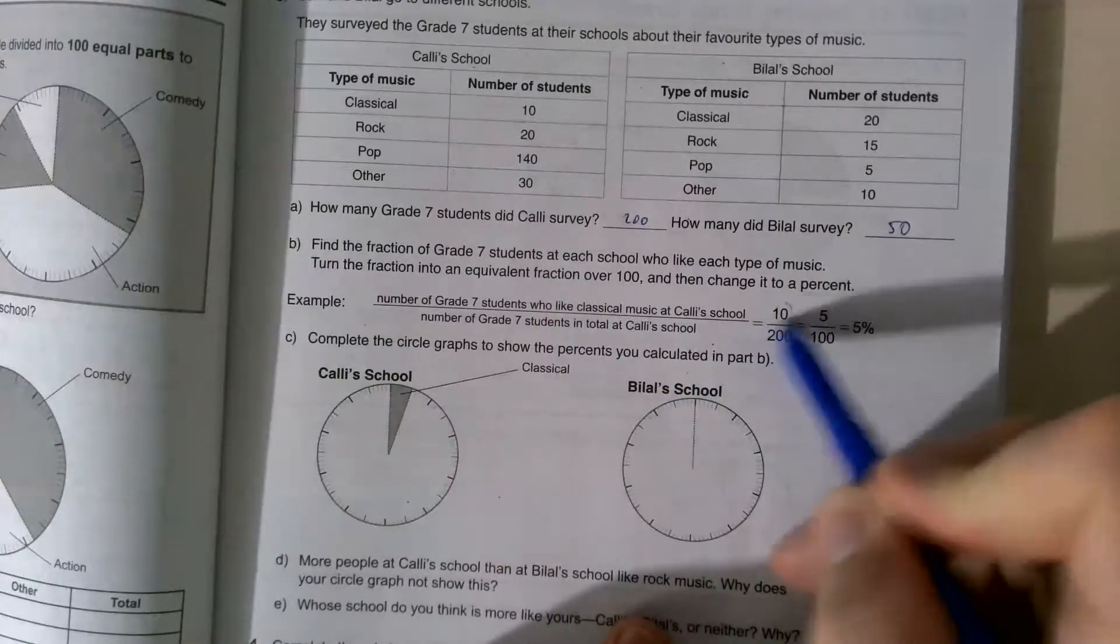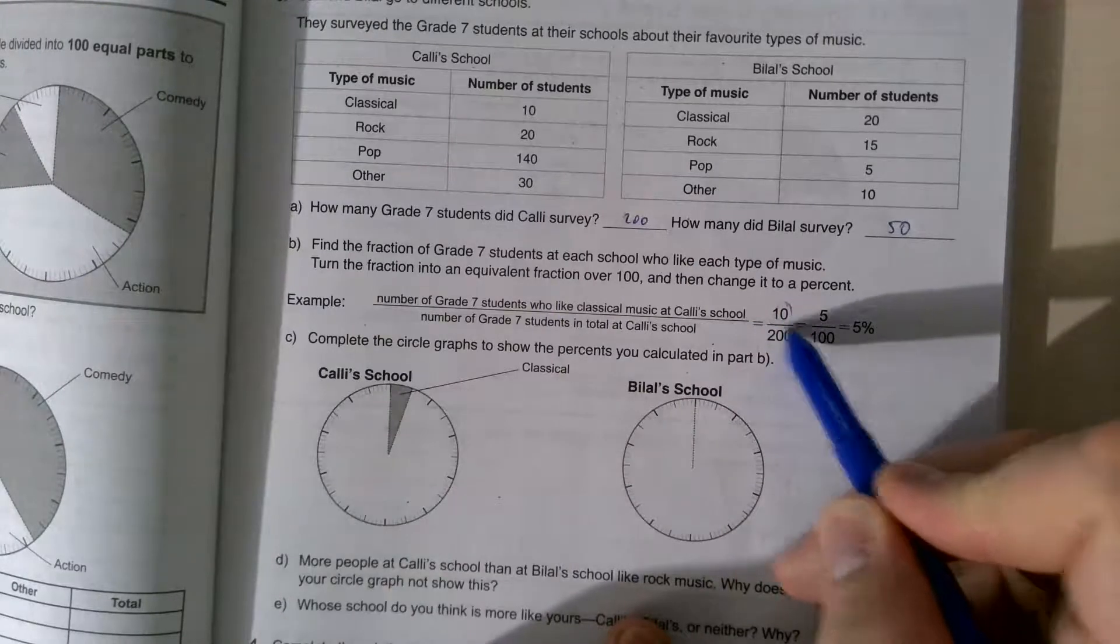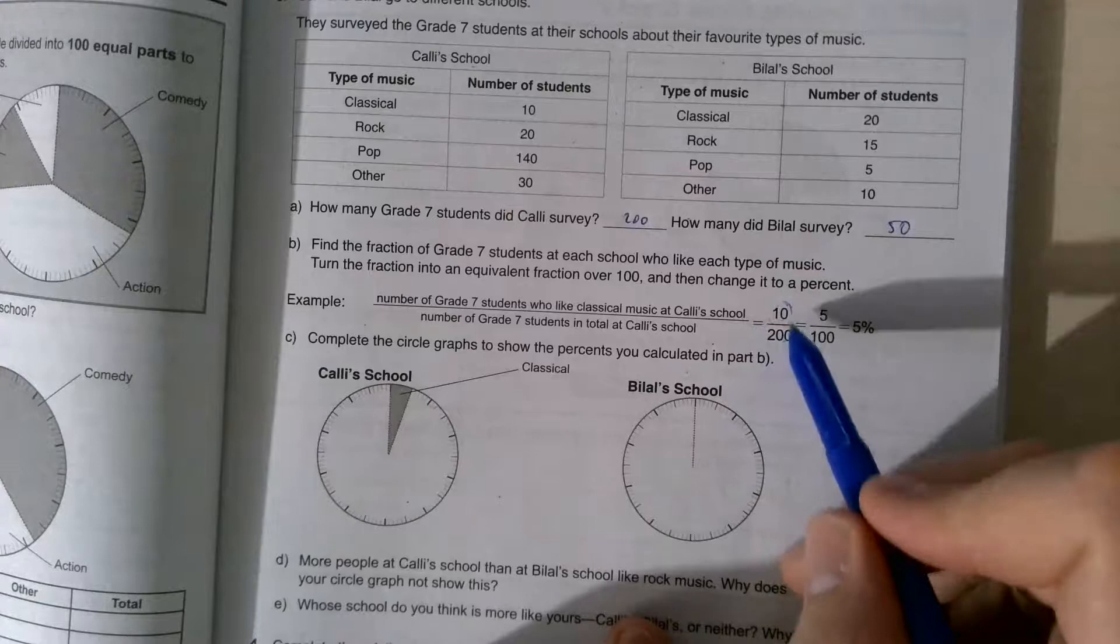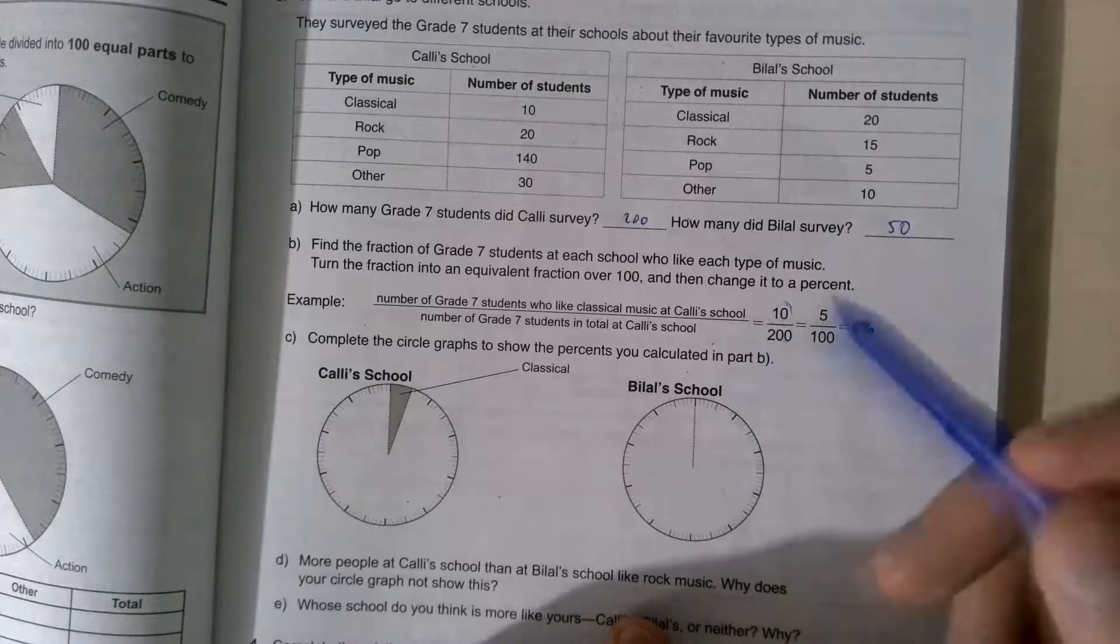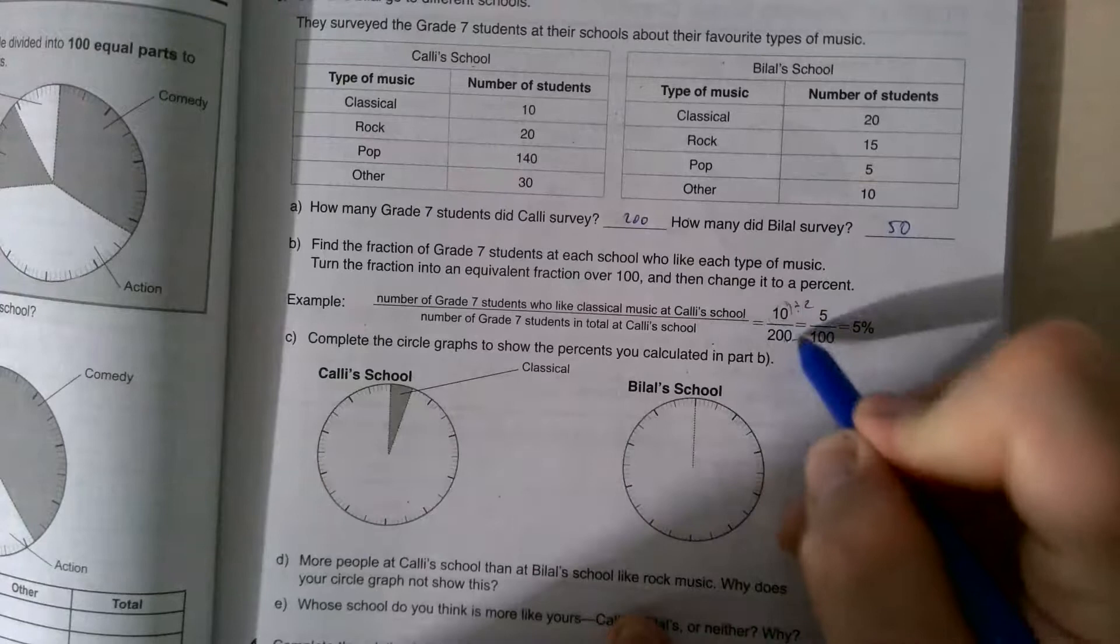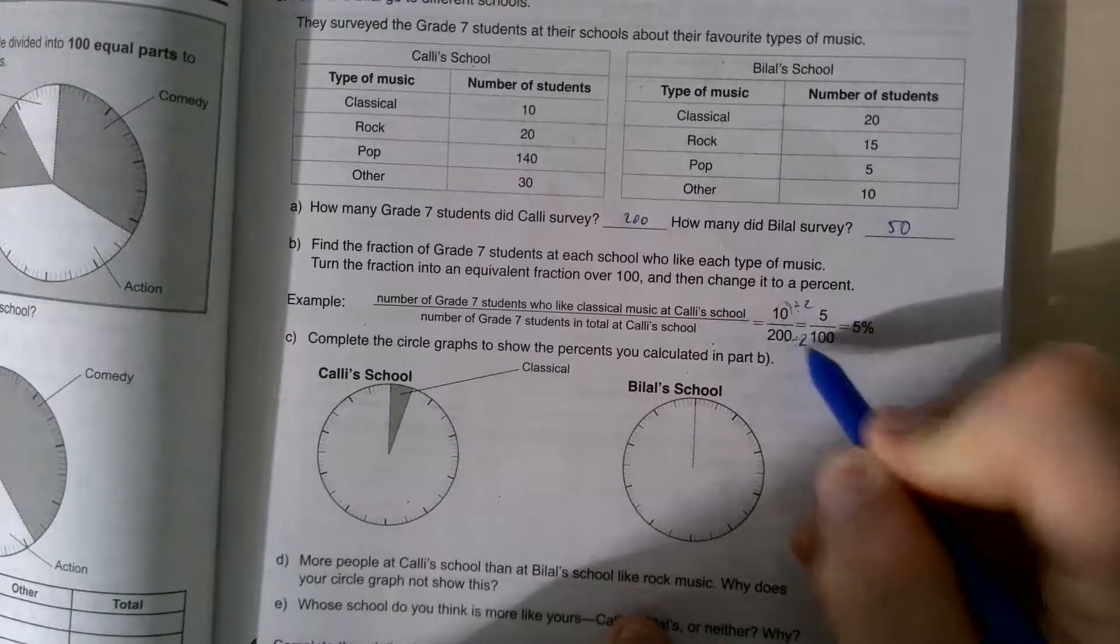So 10 is going to go in the top number, and then how many students I have overall is my bottom number. So it's 10 over 200. Now we can simplify this fraction. We can divide both these numbers by 2. That's what they did. And that's going to give me 5 over 100, which is equal to 5%.